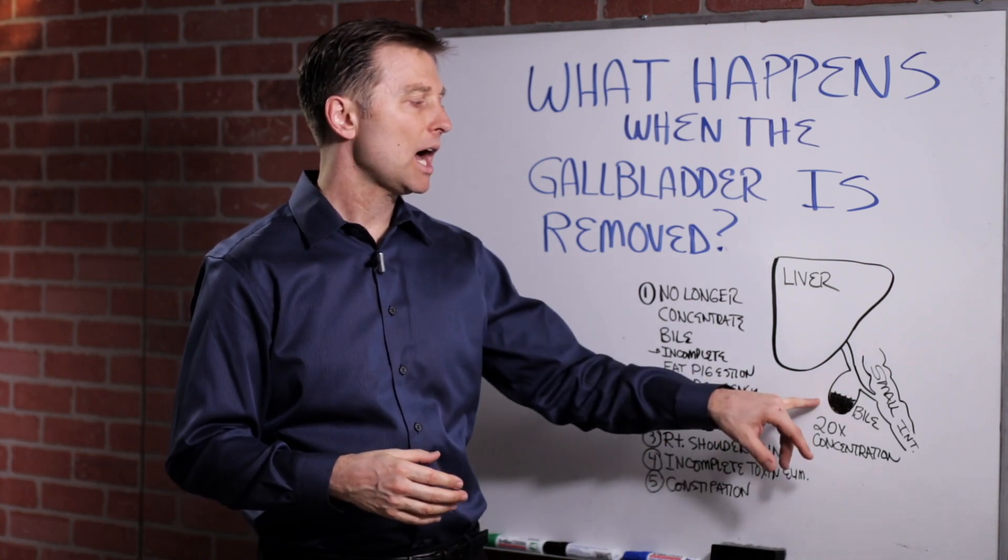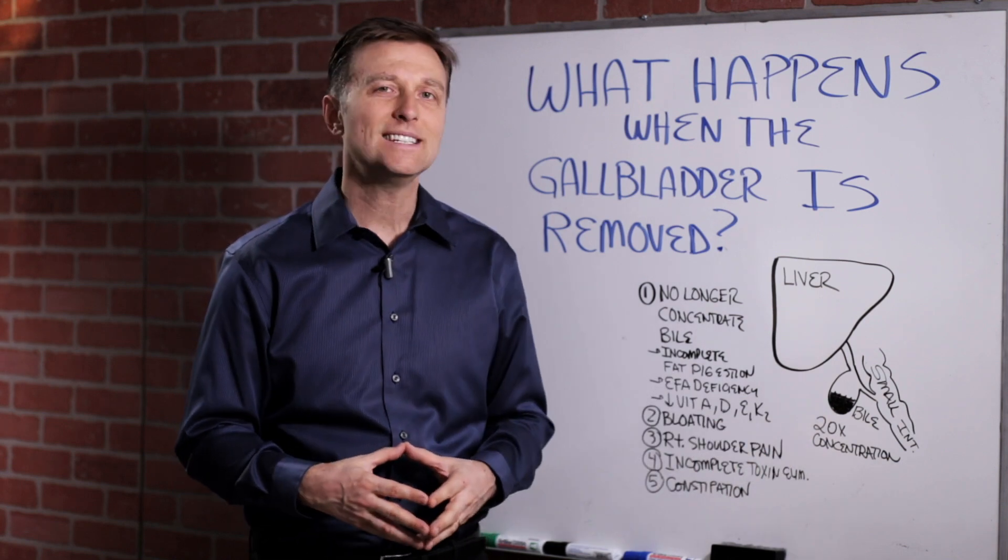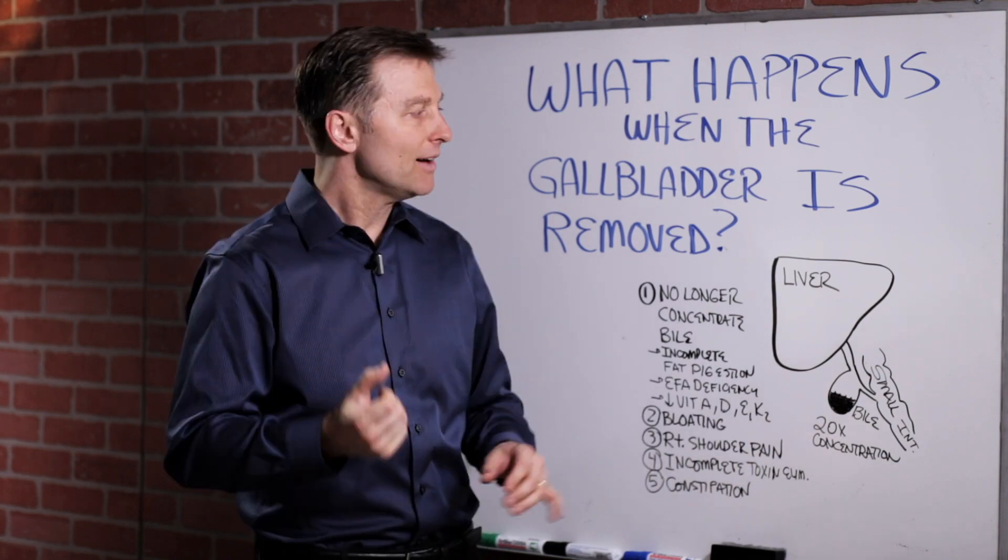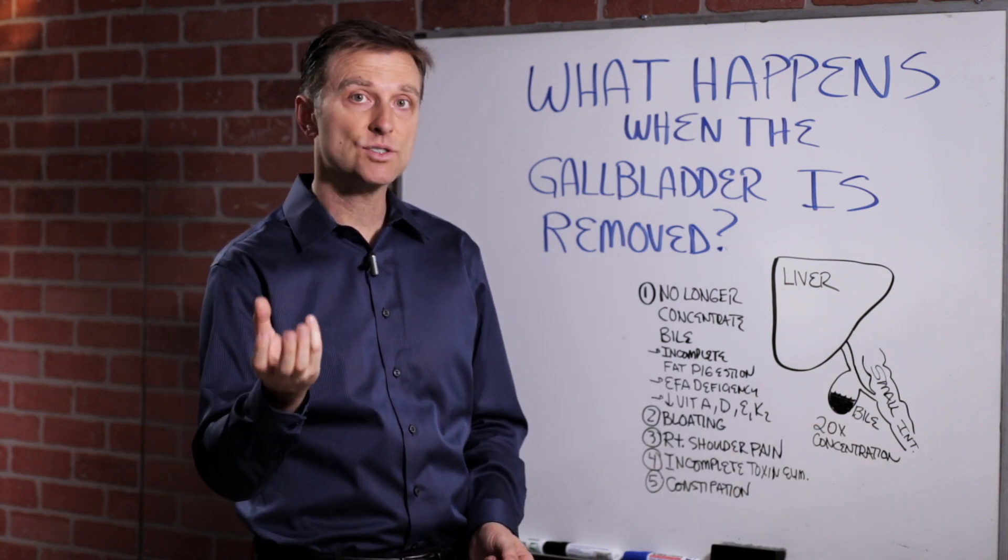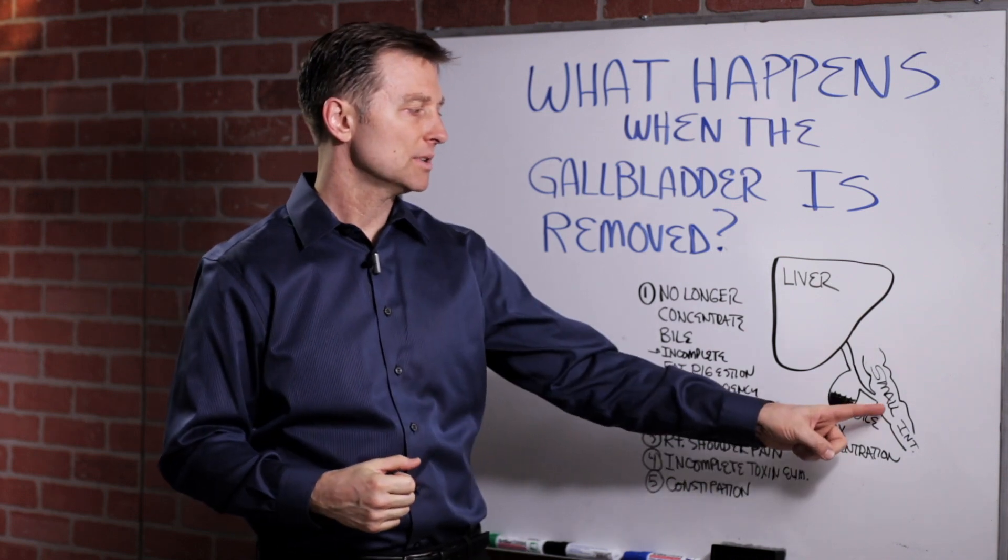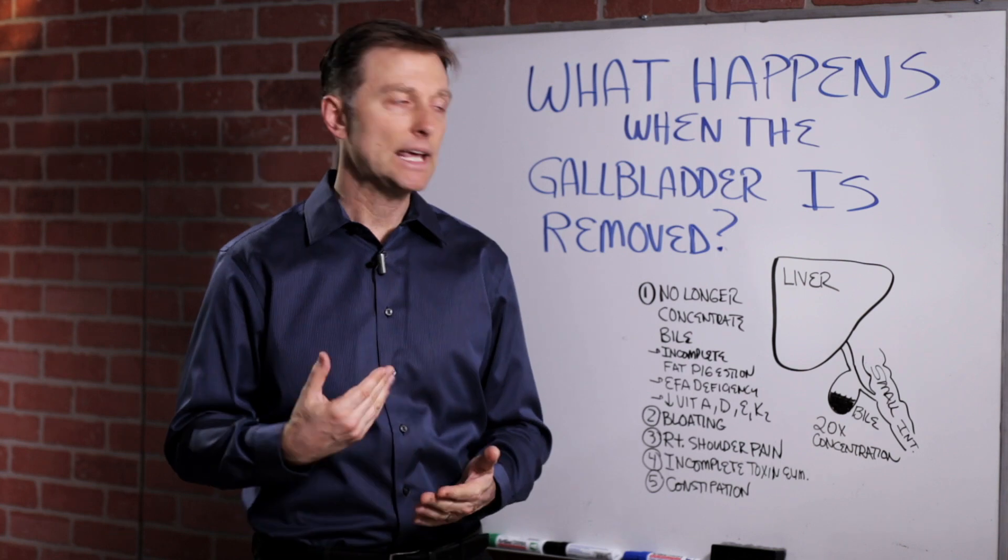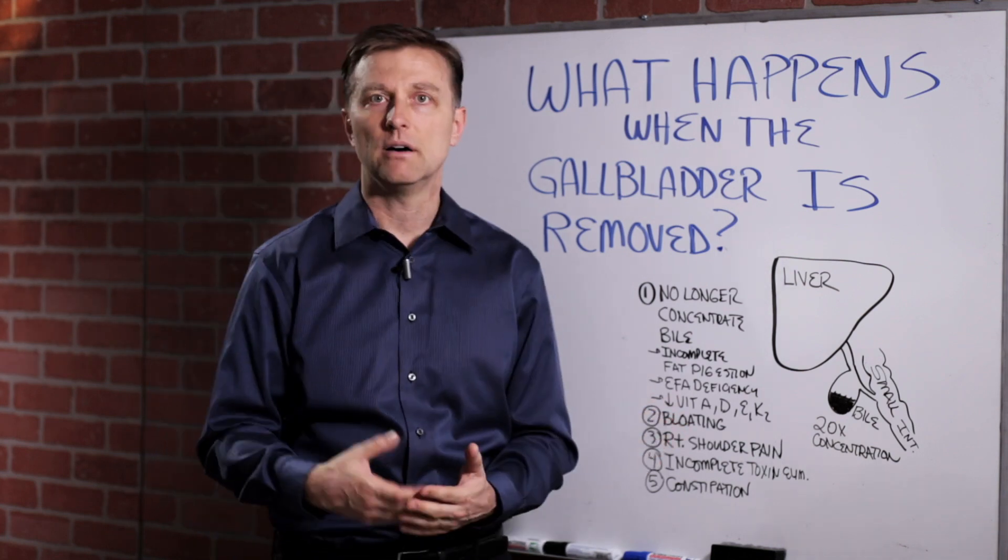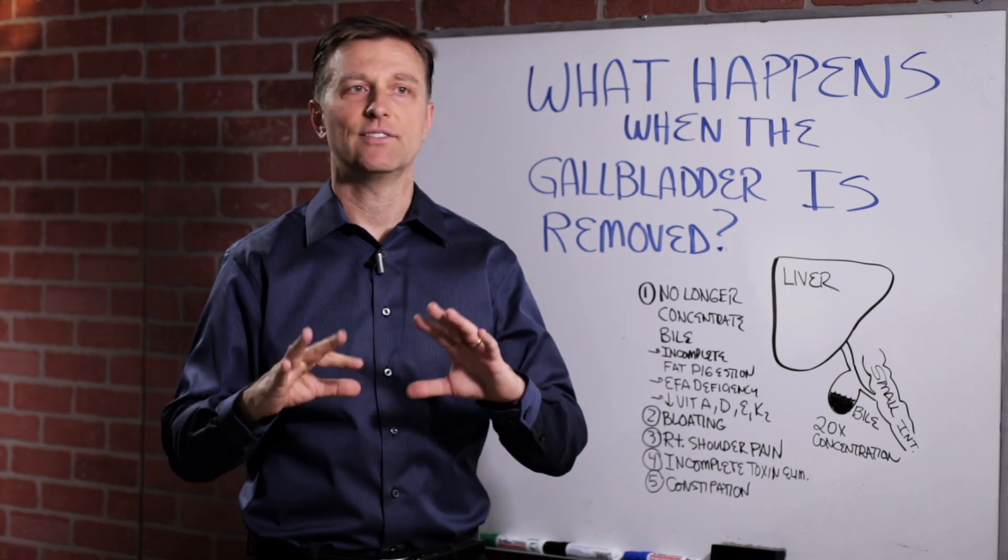And the gallbladder concentrates the bile by 20 times. So when you have bile in the liver, if you compare it to the gallbladder, it's super concentrated and you need that concentration to release when you eat to be able to dissolve the fats. Because if it's not that concentrated, you're going to get incomplete digestion of fats. The stool is going to start to float.